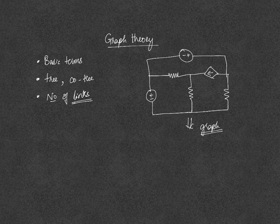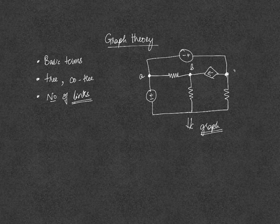Before drawing the graph, it is important to identify the nodes. What is meant by a node? Any point which connects two or more circuit elements. So this is one node A, this is one node B, this node we will name as C, and this node we will name as D.